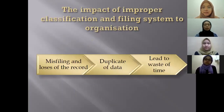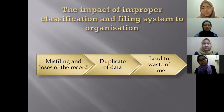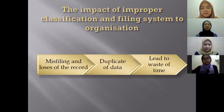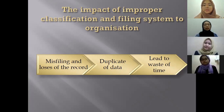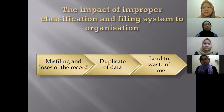Next is the impact of improper classification and filing system on the organization. First is misfiling and loss of records. Improper classification and filing will cause misfiling and loss of records. To avoid this, the organization needs to ensure the system is simple to use and easy to retrieve. Second is duplication of data — records may be stored in different files causing duplication, which also wastes cost. The last impact is waste of time, as the organization will spend too much time searching for needed files or records.